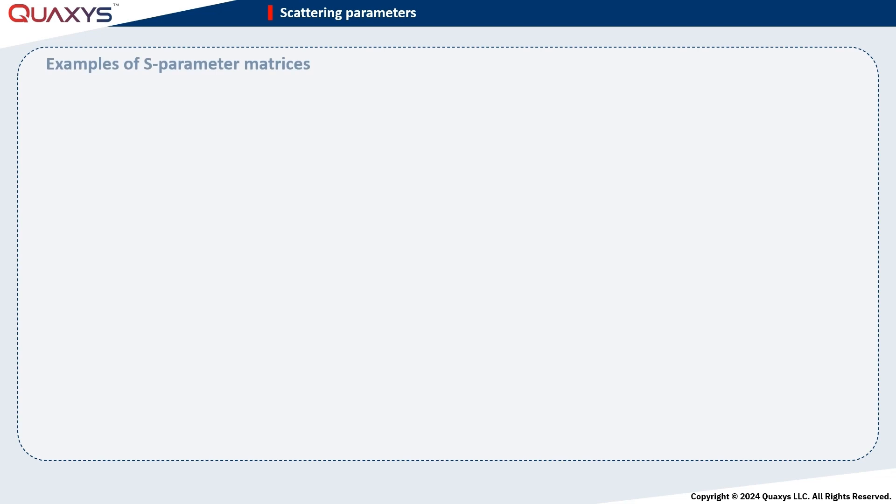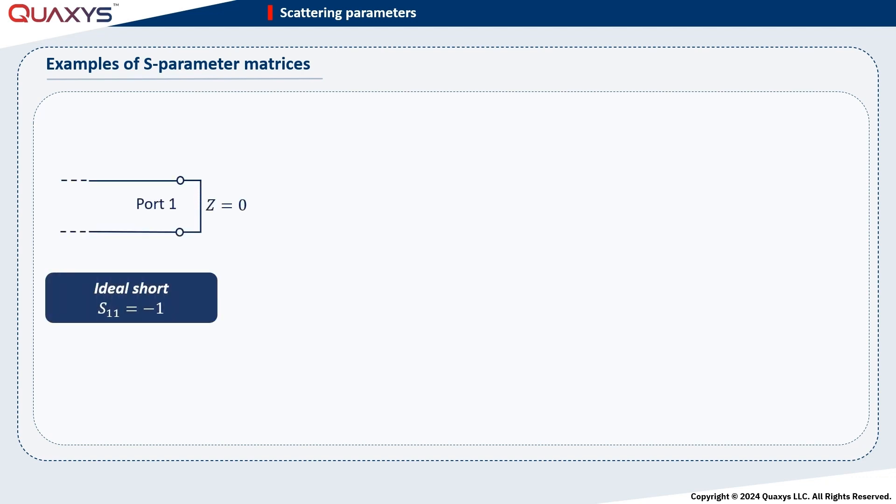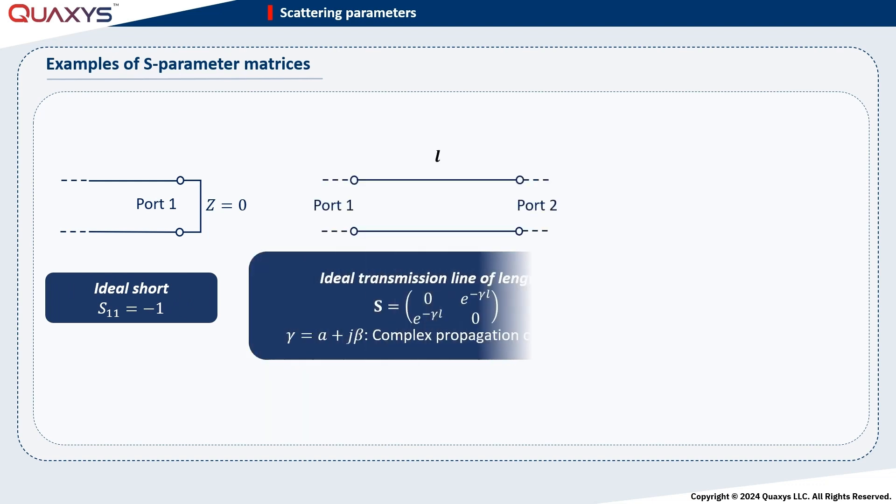Now, let's explore S-parameter matrices for some microwave components with different port configurations. An ideal short is a one-port component with S-1-1 equals minus 1. For an ideal transmission line of length L, the S-parameter matrix has zero diagonal components, indicating perfect matching with no reflection. The off-diagonal components are E to the minus gamma L, where gamma is the complex propagation constant.